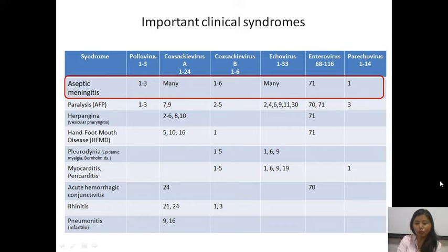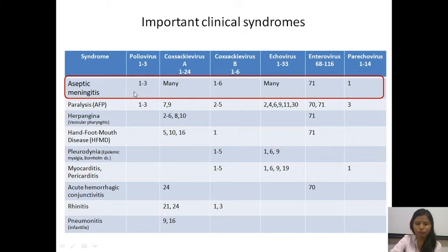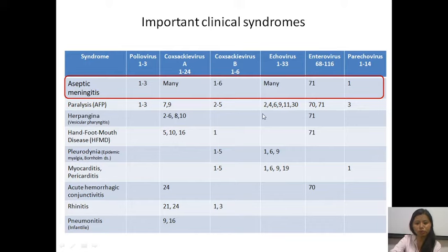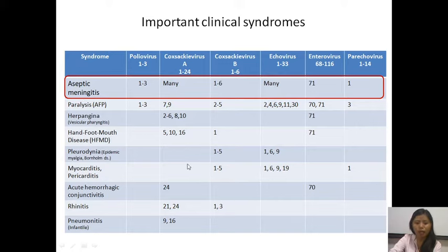Picornaviridae itself is a huge family involving almost all organ systems and causing various syndromes. Aseptic meningitis or viral meningitis can be seen with polioviruses, Coxsackievirus, echoviruses, and other enteroviruses. Paralysis or acute flaccid paralysis — the presentation of polio — can also be seen with several other enteroviruses apart from polioviruses. Other clinical syndromes include herpangina, hand-foot-mouth disease, pleurodynia, myocarditis, pericarditis, acute hemorrhagic conjunctivitis, rhinitis, pneumonitis.